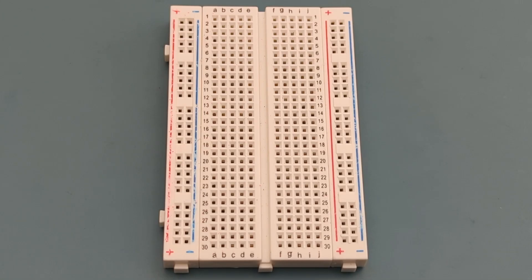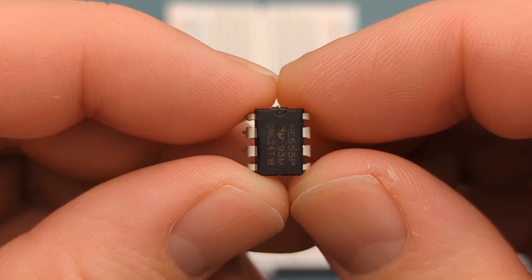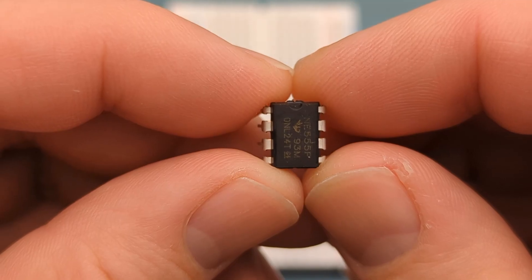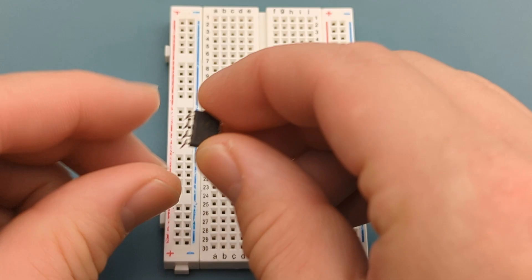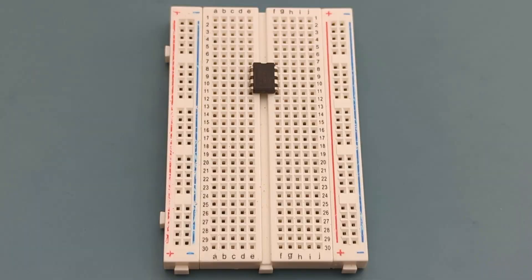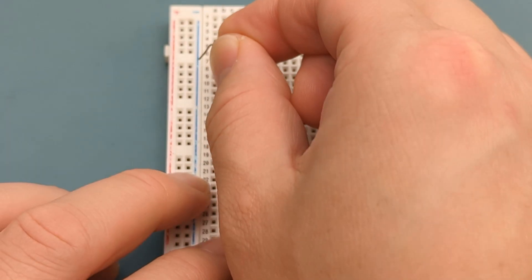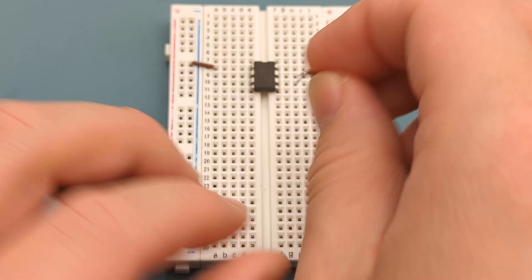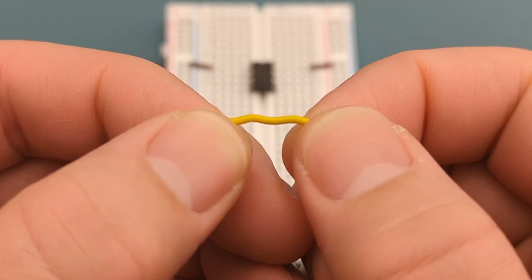Let's set up the circuit step-by-step. Begin by positioning the 555 timer IC on the breadboard. The pins are numbered counterclockwise, starting from the top left corner. Refer to the circuit diagram if you have questions about the circuit connections. Insert the 555 timer in the middle of the breadboard. A jumper wire connects pin 1 or ground to the negative rail. A jumper wire connects pin 8 or VCC to the positive rail. Use a jumper wire to connect pin 2 or trigger to pin 6 or threshold.